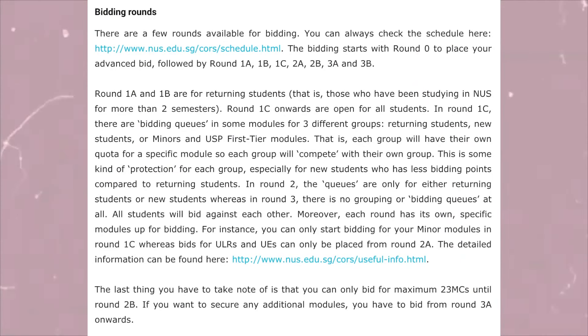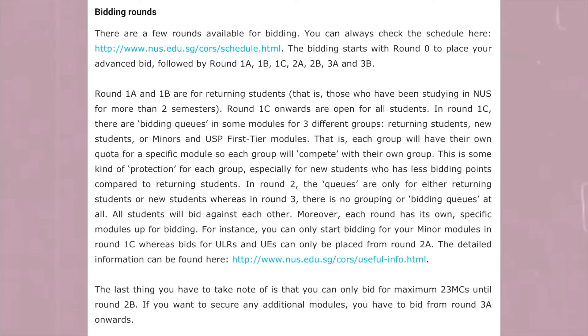Now let's talk about the bidding rounds themselves. There are many rounds: Round 1A, 1B, 1C, 2A, 2B, 3A, and 3B. Bidding starts with Round 0 to place your advanced bid, followed by the subsequent rounds. You can always check the schedule for the details. Round 1A and Round 1B are for returning students — those who have been studying in NUS for more than two semesters.